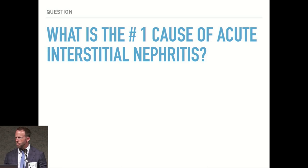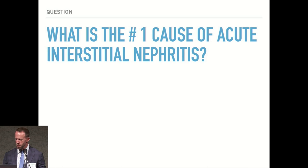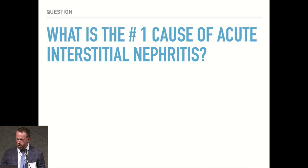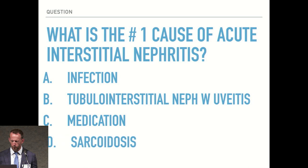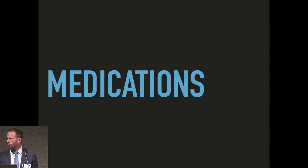Let's hit some questions. What is the number one cause of acute interstitial nephritis? Is it A, infection? B, tubular interstitial nephritis with uveitis? C, medications? D, sarcoidosis? Medications are right now the number one cause — that's pretty clear.